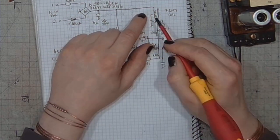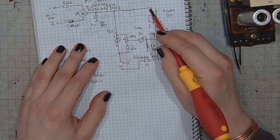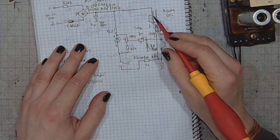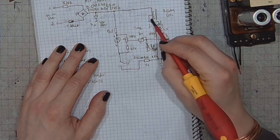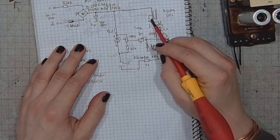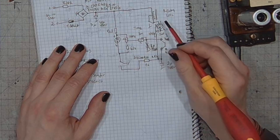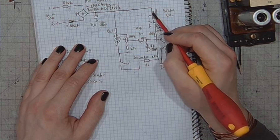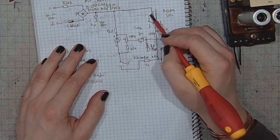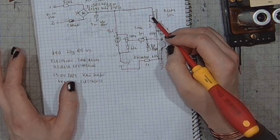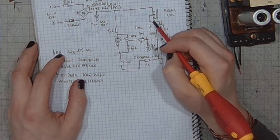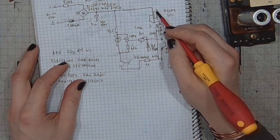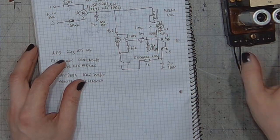One thing worth noting is that before the thyratron fires, one half of the coil is bypassed. So the current will flow through half of the coil, then it will flow through the break contact on the relay and the thyratron, causing the relay to switch on.